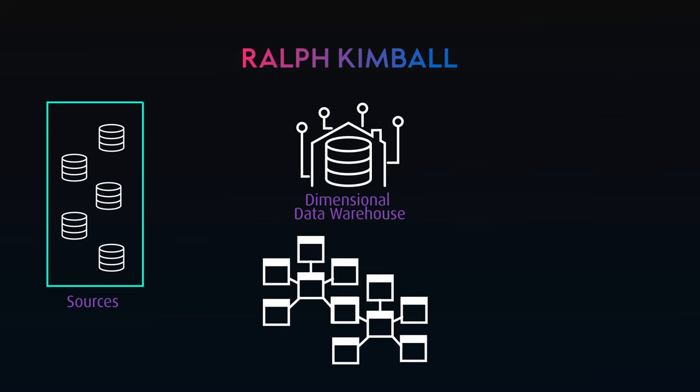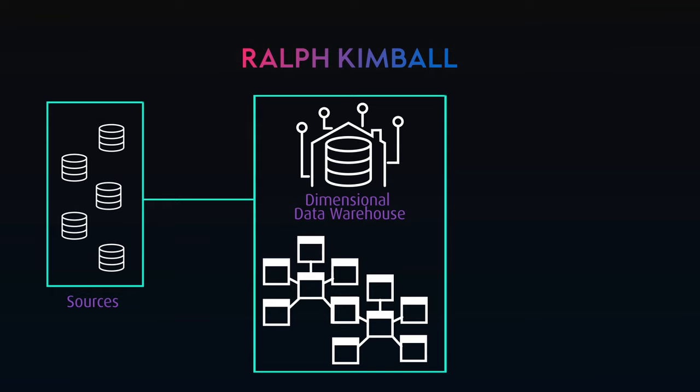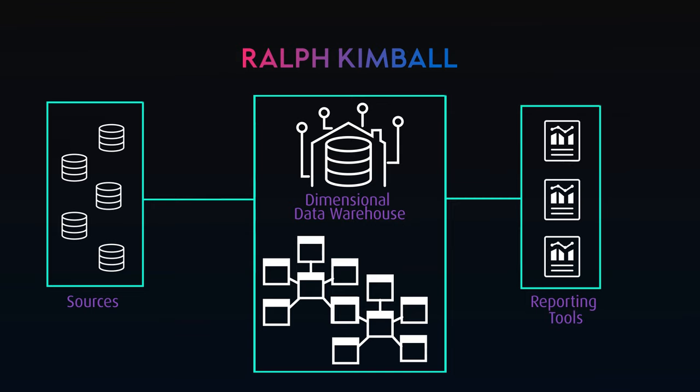Multiple data marts get connected together via shared attributes and this forms the Dimensional Data Warehouse. This is a ground-up approach as a single process is defined, modeled, and data loaded, then another process, repeated until all required data exists within the warehouse.